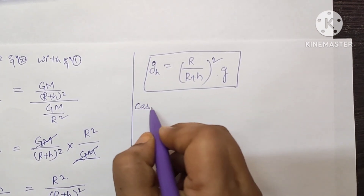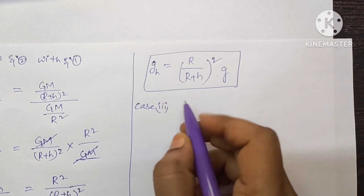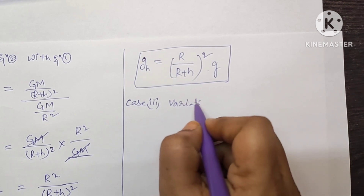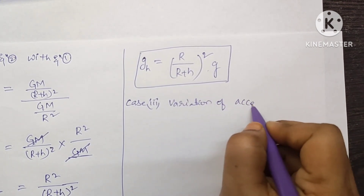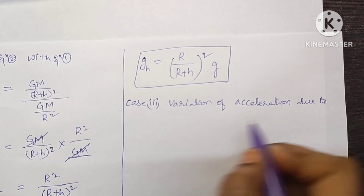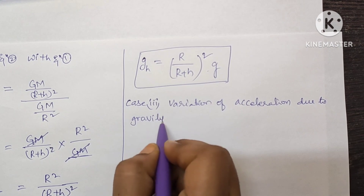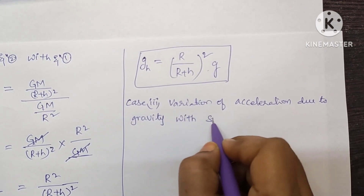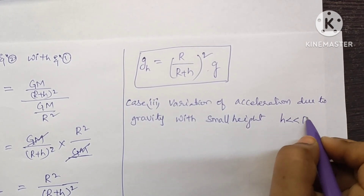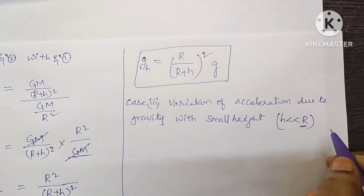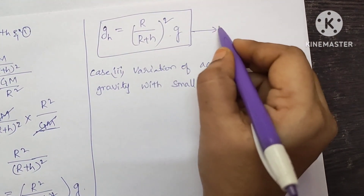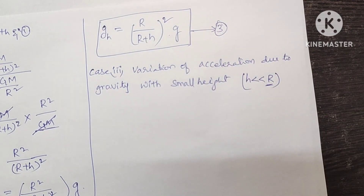Now let's consider Case 3 — variation of acceleration due to gravity with small heights, where the condition is h much much less than R, where capital R is the radius of the Earth. Let it be equation number 3.